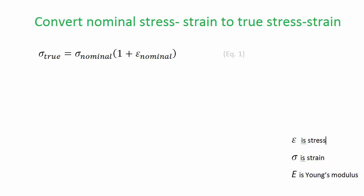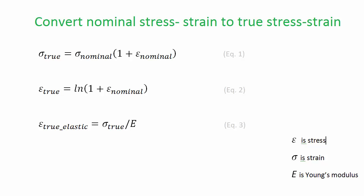Material test data is often in the form of nominal stress and strain, and I want to take a moment to explain how you would convert the nominal stress-strain to true stress-strain data that Abaqus can use. You find the true stress from the nominal stress and nominal strain using equation 1. The true strain is found from the nominal strain using equation 2. Since the strains obtained from the test data are probably not plastic strains but rather the total strain, this total true strain needs to be decomposed into its elastic and plastic components. The true elastic strain is obtained from the true stress and the Young's modulus using equation 3. The true plastic strain can then be found by subtracting the true elastic strain from the total true strain as shown in equation 4.